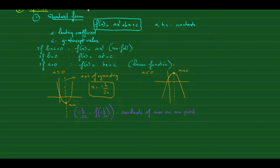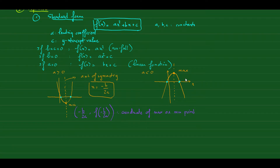Looking at the graph, you can see the intersection points where the parabola cuts the x-axis. This is the y-axis and this is the x-axis. The two points where it cuts the x-axis are called the x-intercept points.